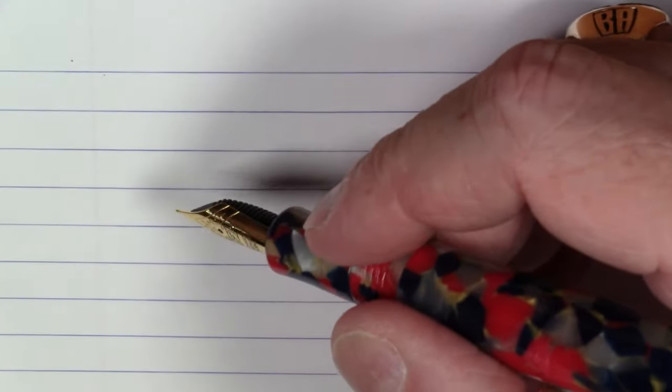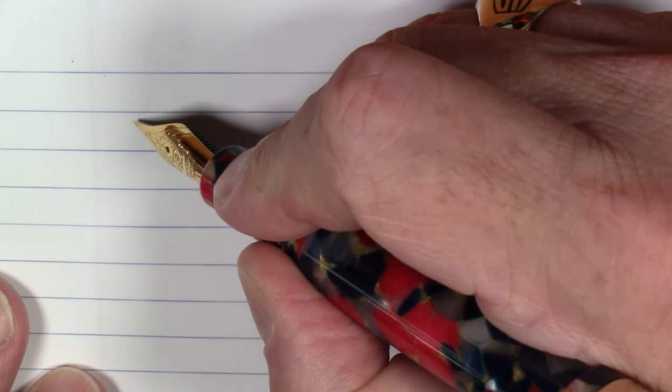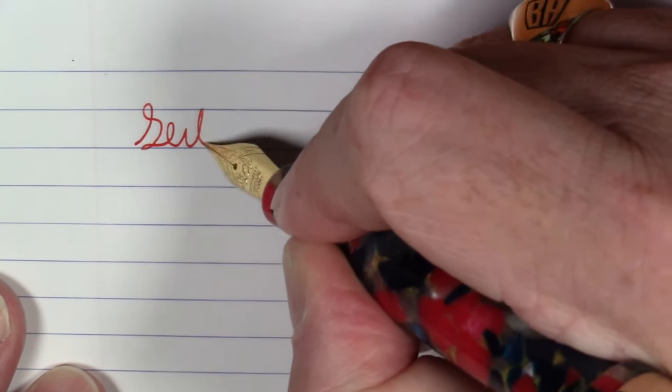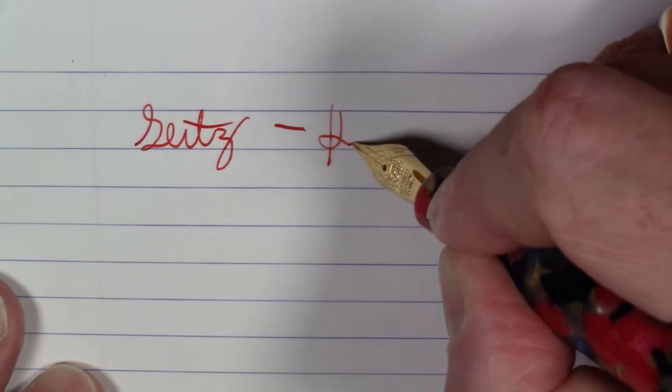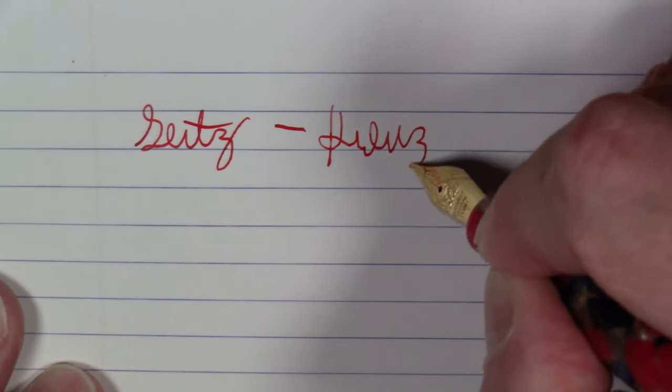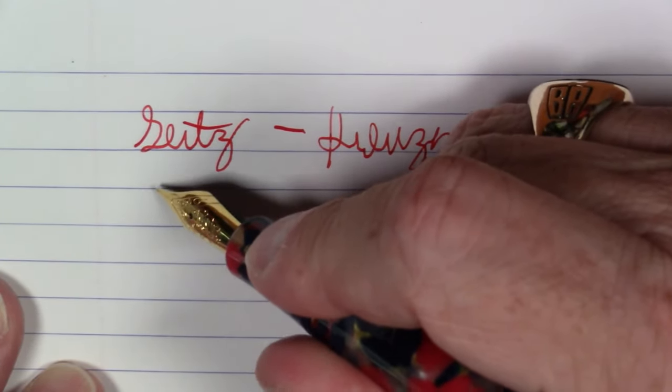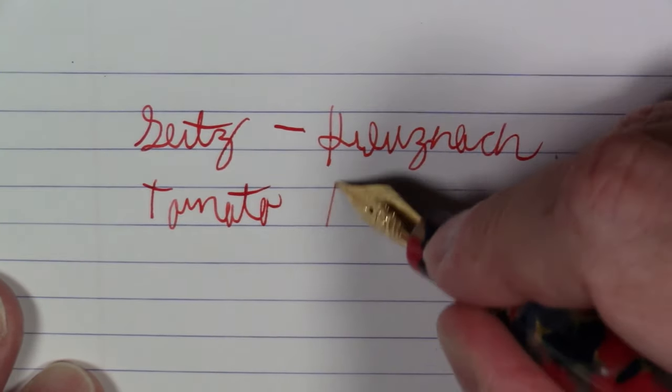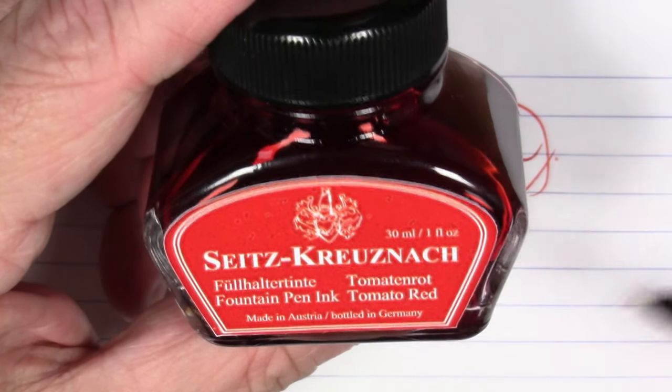I think that'll about do it for the pen. Let's talk about this ink for a bit, shall we? This ink is from a German company and this ink is Seitz Kreisenach Tomato Red. Or Tomato Red, if you're in the UK.